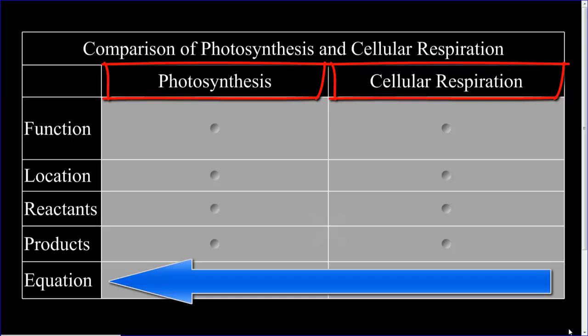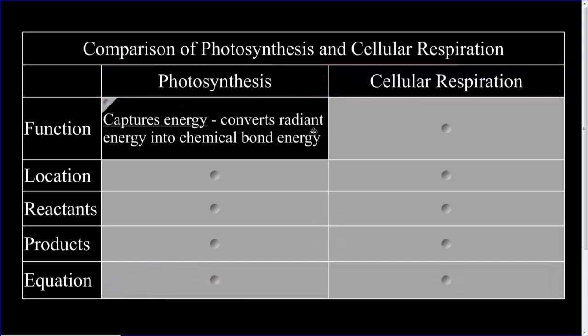and the summary equation for each of these two metabolic processes. Let's look at the function of photosynthesis. Photosynthesis captures energy, converting radiant energy of sunlight into chemical bond energy of glucose.